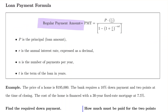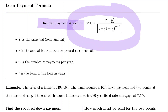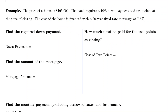APR is the annual percentage rate of the loan, and this formula will be used to get our monthly payment. In the formula, P is the principal or loan amount (selling price minus down payment), R is the annual interest rate expressed as a decimal, n is the number of payments per year, and T is the term or length of the loan in years.